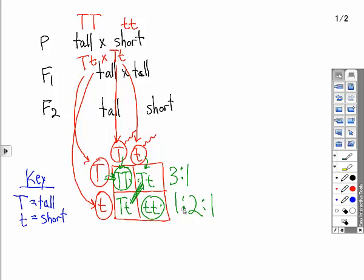A genotype ratio could be expressed as one to two to one. Another type of question you could be asked is, what is the probability of these parents having offspring that are homozygous recessive? And you'd express that answer as one out of four, or twenty-five percent.